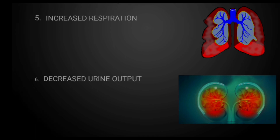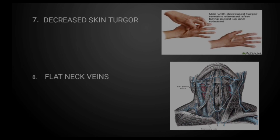The seventh sign is decreased skin turgor. When a person is dehydrated they will have decreased skin turgor — basically when you pull the skin on the hand, it is not going to recoil back normally. You will also see dry mucous membranes and thirst. Additionally, you'll observe flat neck veins because there is no volume in the veins.